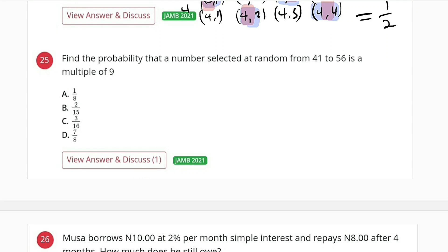Find the probability that a number selected at random from 41 to 56 is a multiple of 9. Okay, we need those numbers that are divisible by 9. So let us write them. We have 41, 42, 43, 45, and lastly 56.